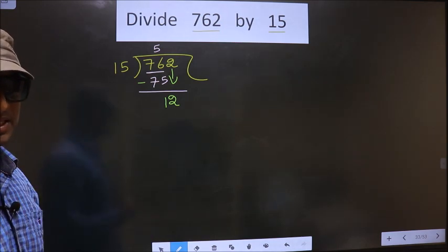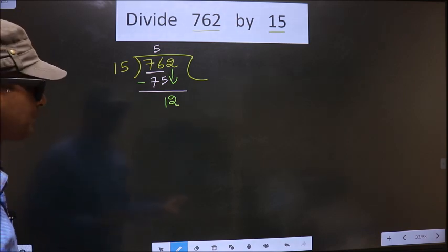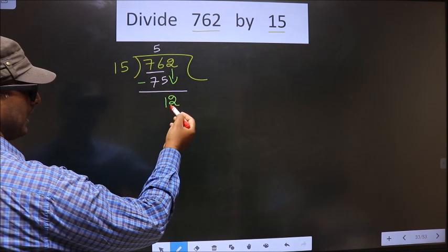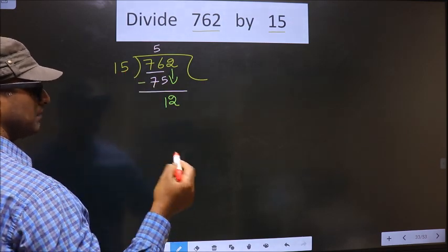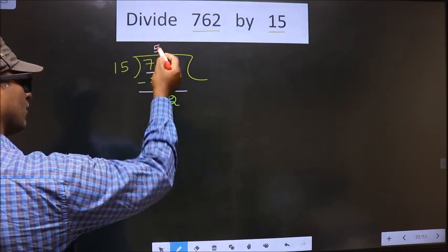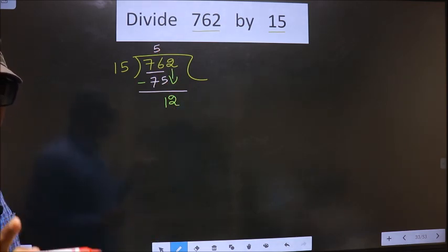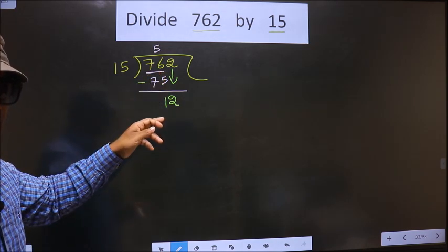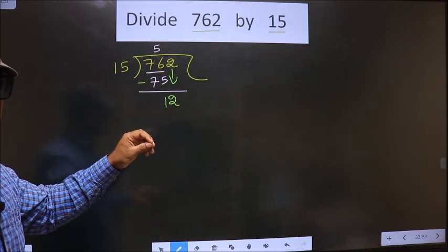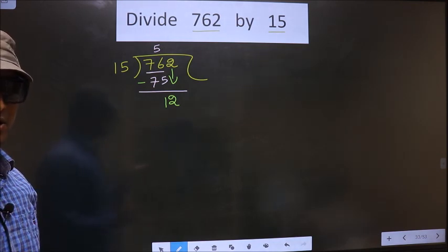This is where the mistake happens. The mistake is this: here we have 12, which is smaller than 15, so what many do is they put a dot and take 0 here, which is wrong. Just now you brought a number down, and in the same step you want to put a dot and take 0, which is wrong.